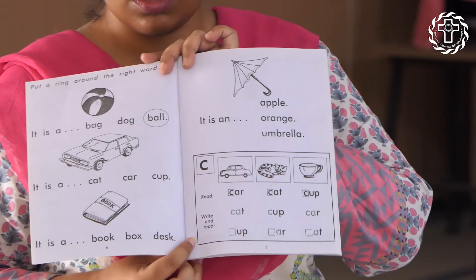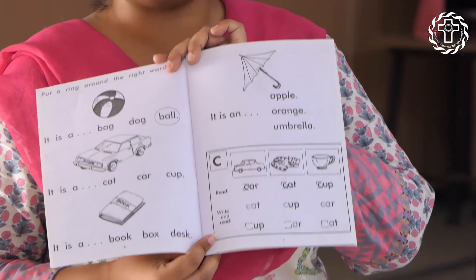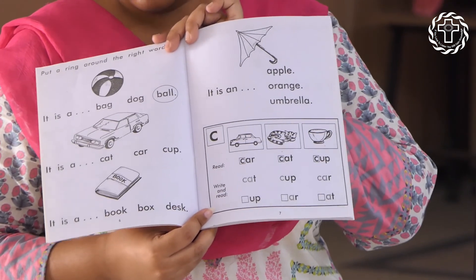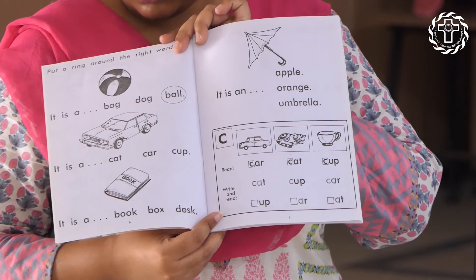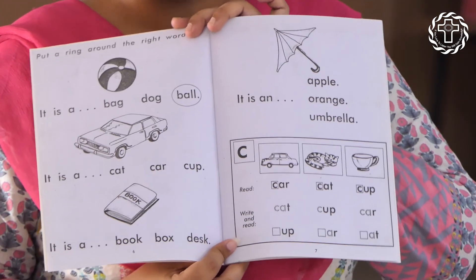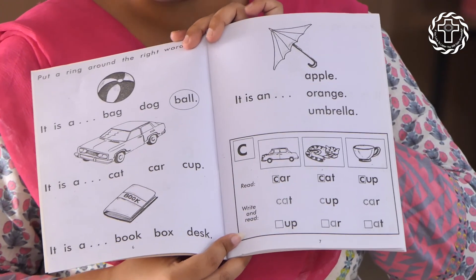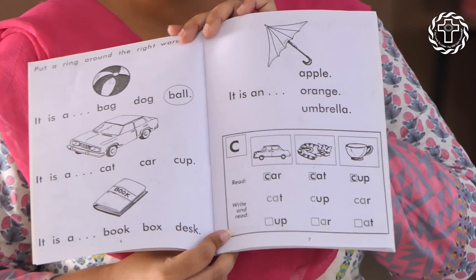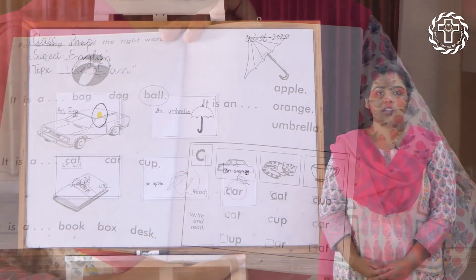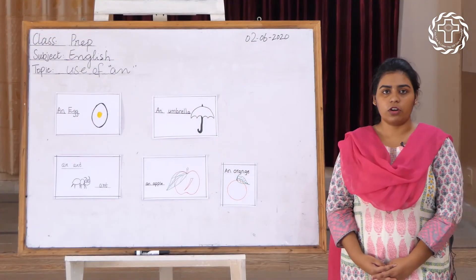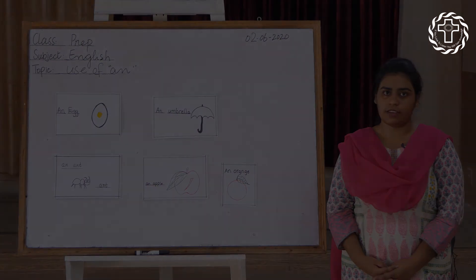Look at the book. This is your home activity. You have to do your homework in your workbook which is on page number six and page number seven. Thank you. God bless you. Stay home, stay safe.